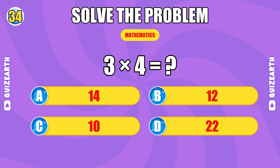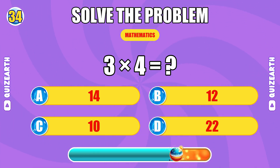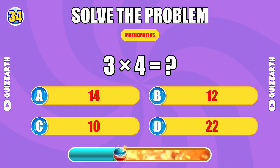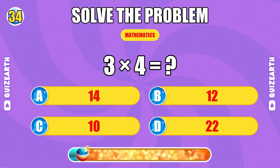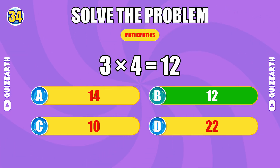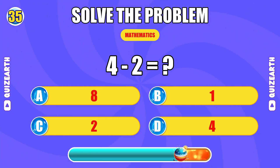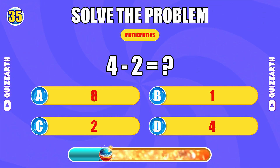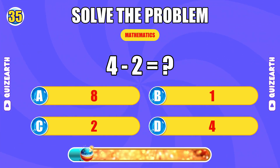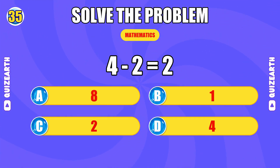What is three times four? Absolutely crushing — the answer is 12. How much is four minus two? Perfect focus — the answer is two.